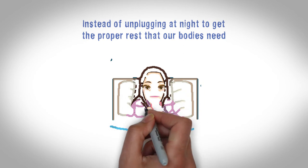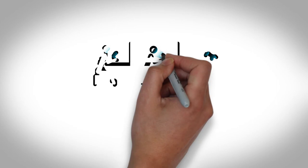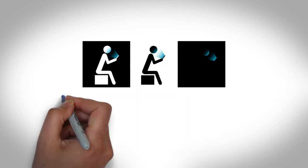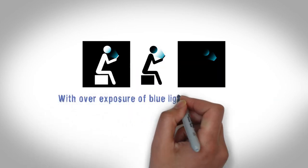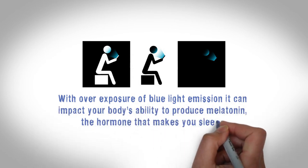Notifications on our phone and TV shows before falling asleep at night. Technological devices emit blue light which is stimulatory. With overexposure of blue light emission, it can impact your body's ability to produce melatonin, the hormone that makes you sleepy.